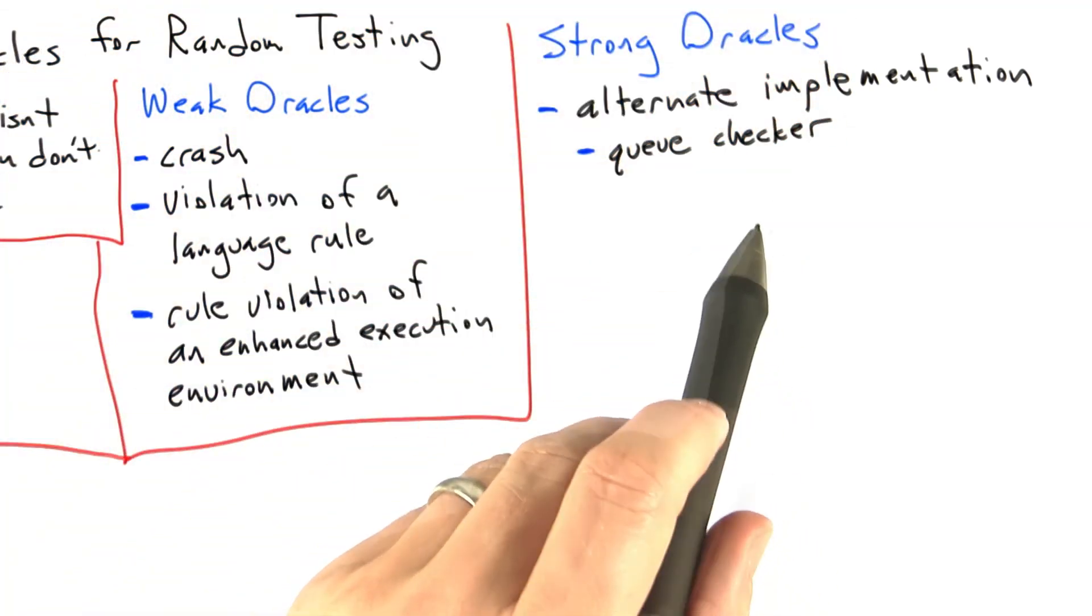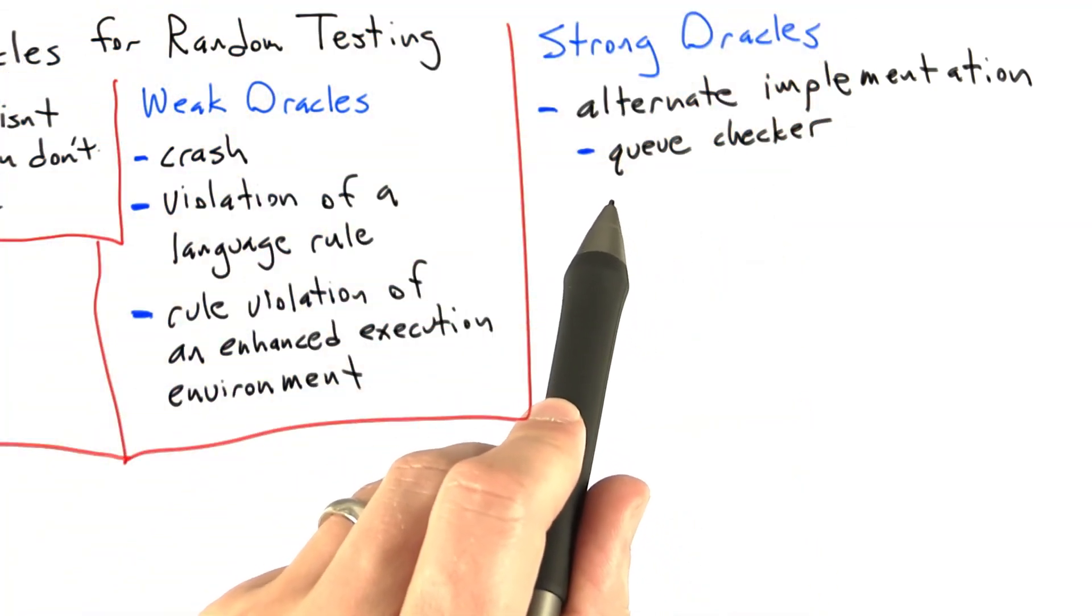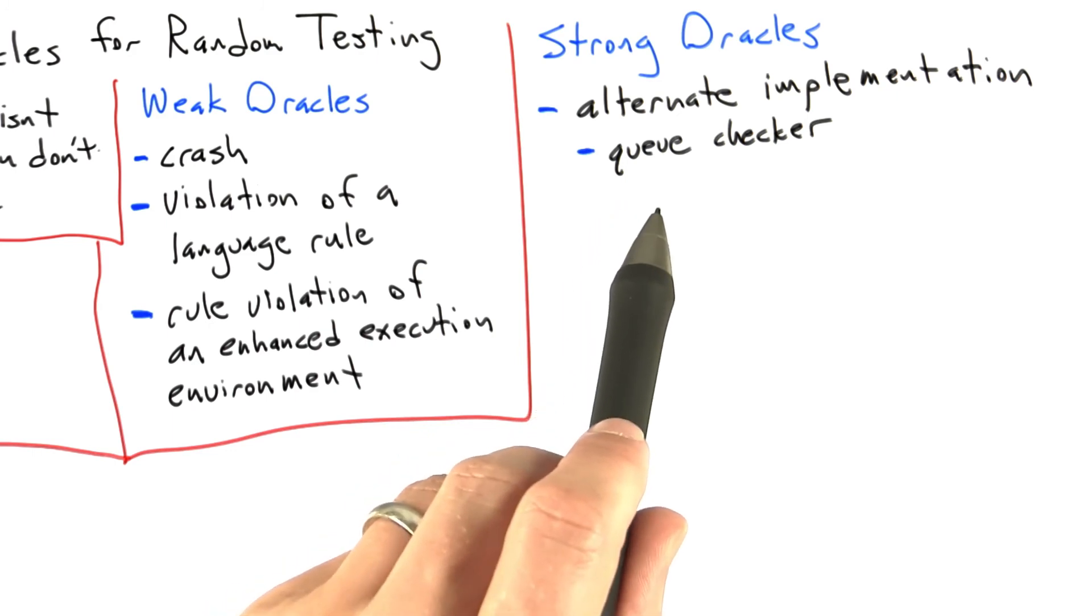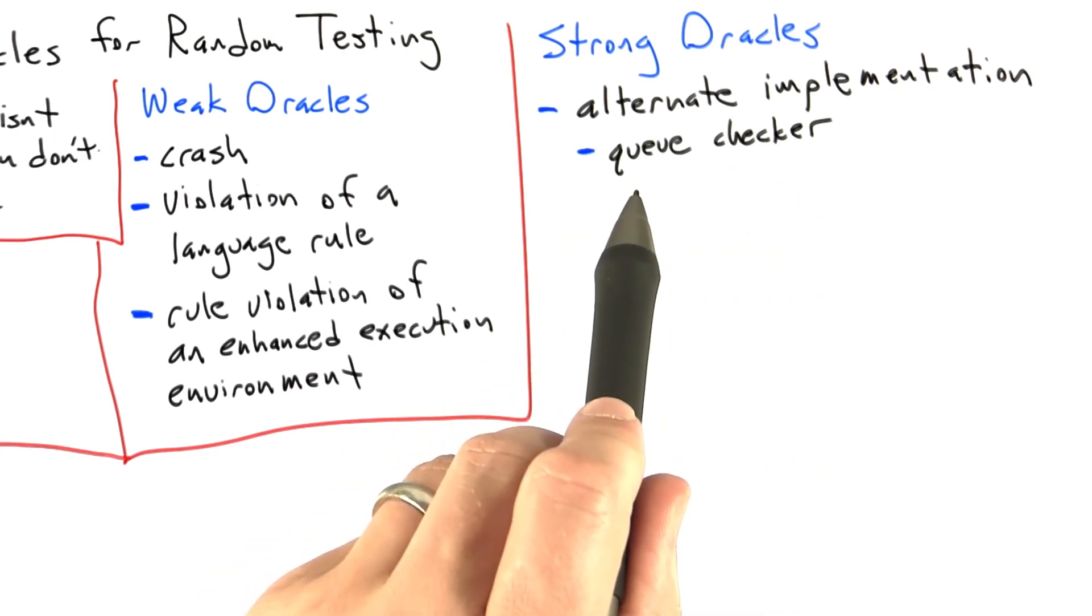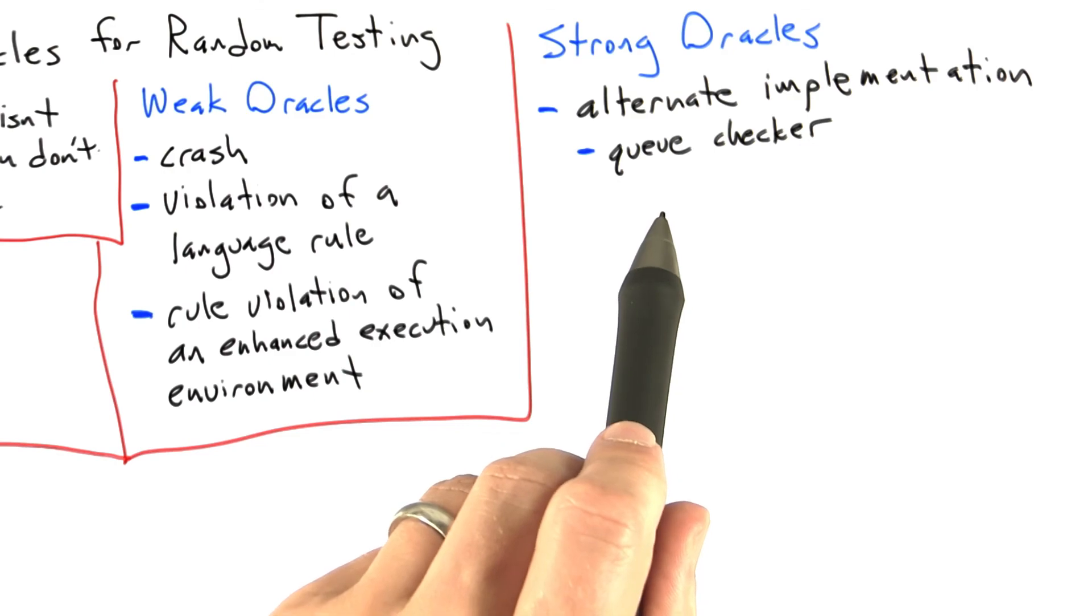What I mean by that is my queue tester included a second implementation of the same queue abstraction. This one was implemented with a Python list, and since it was a second implementation of the same abstraction, we could use it to check that the queue we were testing gave the right answers. That's a very strong kind of check.